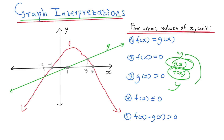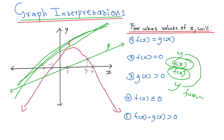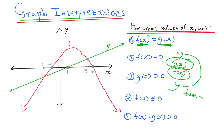If you want to understand what g of x or f of x is, you must know that g of x is just y. Even f of x is just y. And what are y in our graphs? They are just a function — the whole graph, basically. So when I draw a graph, that graph is your y. So the minute you are given f of x is equal to g of x, they mean the function is equal to the function — they cut each other.